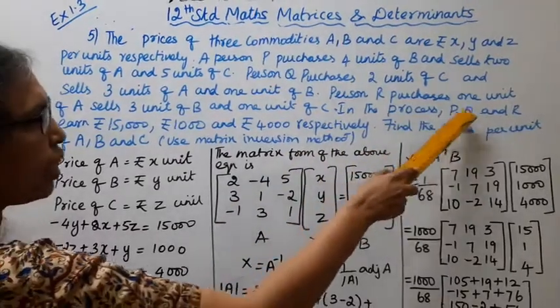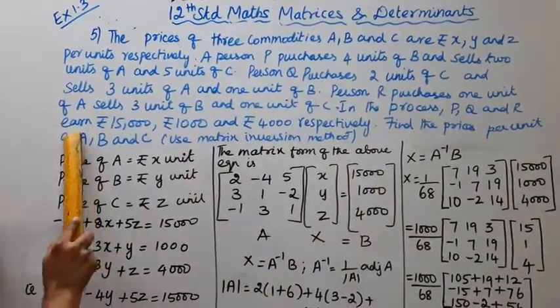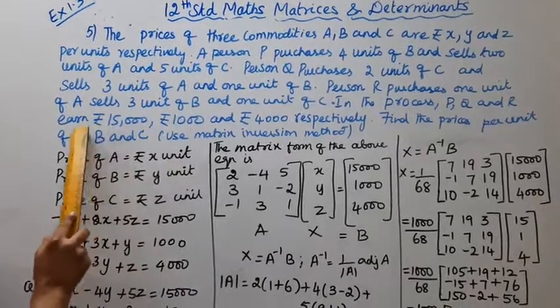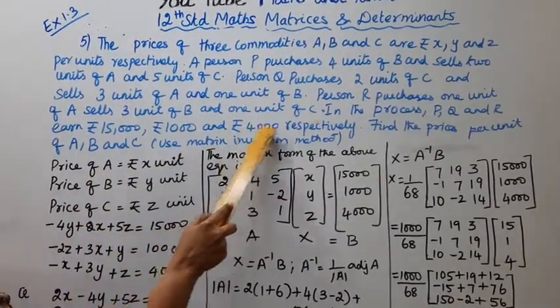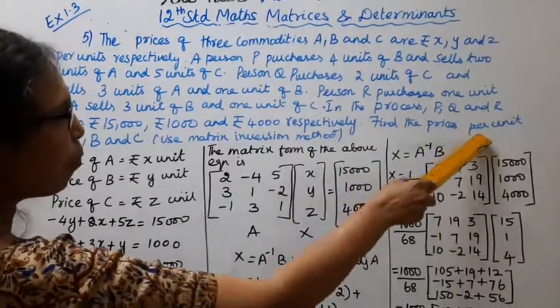Sells 3 units of B and 1 unit of C. In the process P, Q and R earn, in the process Rs. 15,000, Rs. 1,000 and Rs. 4,000 respectively.